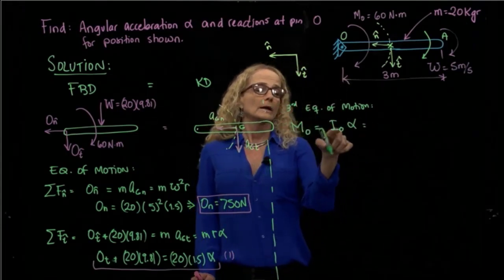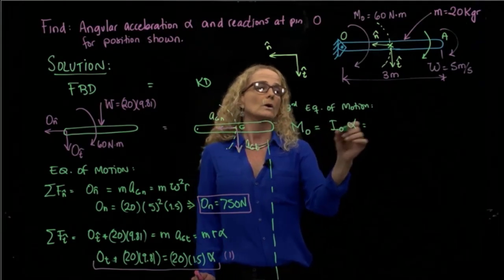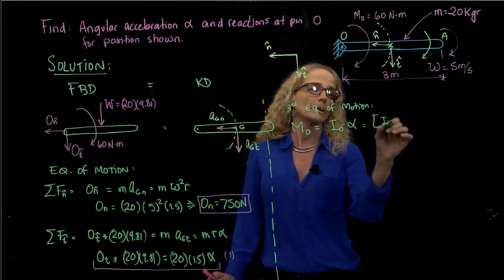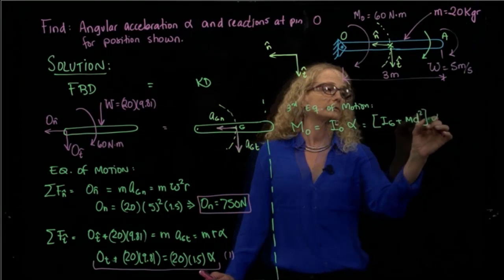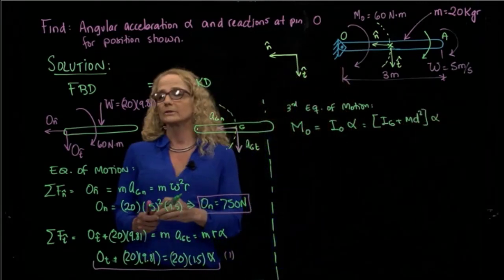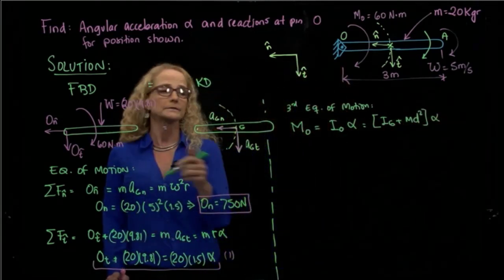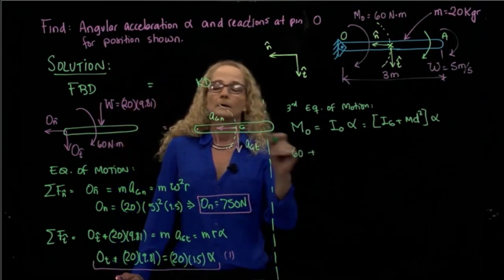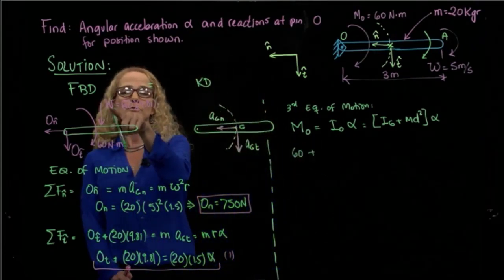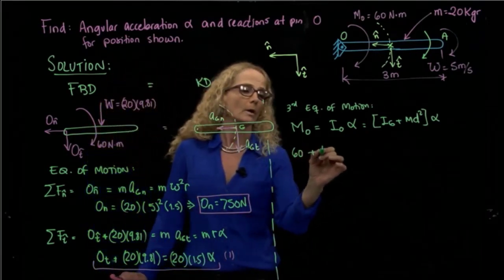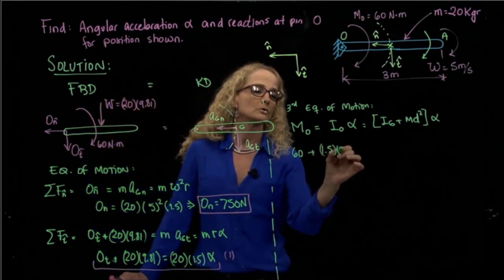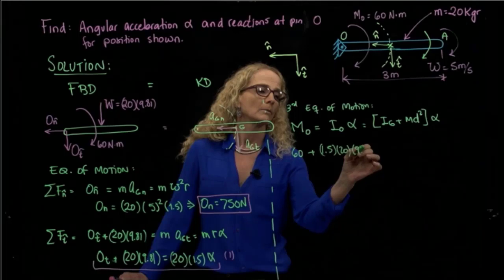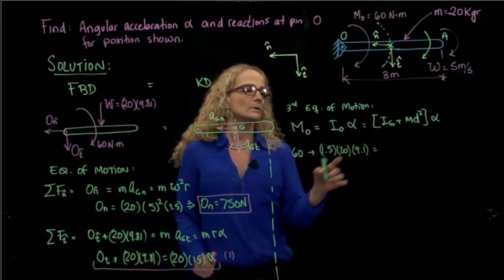And to calculate the moment of inertia with respect to O, we need to use theorem of parallel axis. So that will be that. What are the external moments that I have? I have 60, and I have the moment produced by the weight, which will be 1.5 times 20 times 9.8, and that's equals 2.